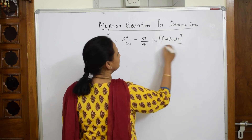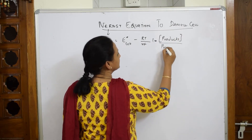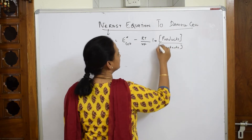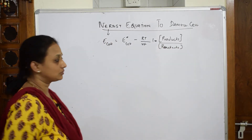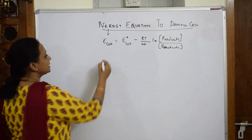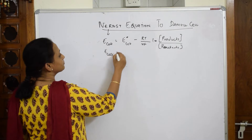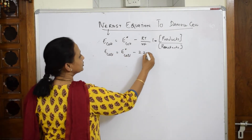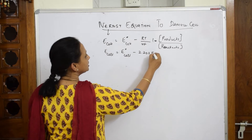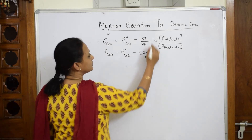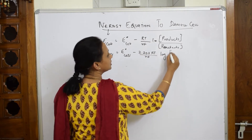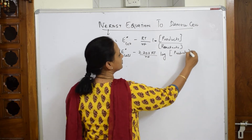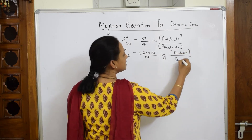Now further, if I have to convert this ln to log, we write: E_cell is equal to E°_cell minus 2.303 RT by NF, times log of products by reactants. This is what we have studied.